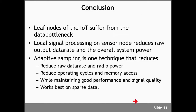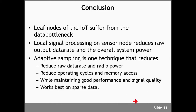In conclusion, the leaf nodes of Internet of Things applications usually suffer from a data bottleneck. Local signal processing on the sensor nodes can reduce the raw output data rate and reduce overall system power. Adaptive sampling is just one of many techniques, but it can reduce both the raw data rate and the radio power, and it can also reduce the operating cycles and memory access of DSP in some cases. In theory this is a perfectly lossless technique, so it can maintain good performance and signal quality — though it works best on sparse data. And that concludes our tutorial.